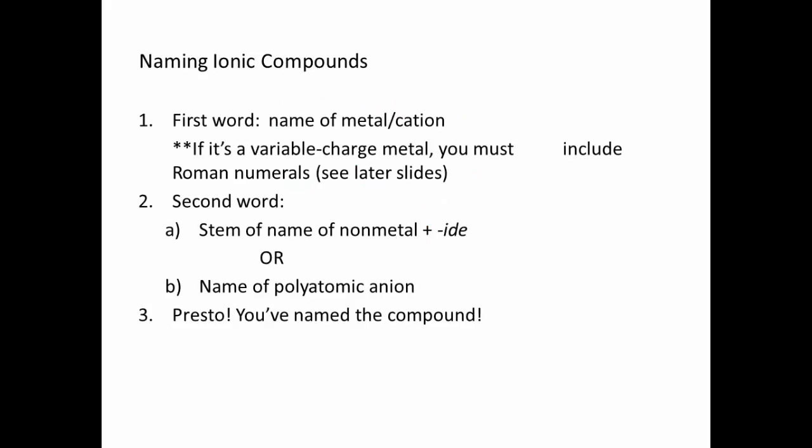We are going to combine these into our names of our compounds. So, when we name an ionic compound, the first word is just going to be the name of your metal or your cation. Your cation is normally going to be a metal unless you've got one of our two positively charged polyatomic ions, which are ammonium or hydronium. If we have a variable charged metal, we're going to be doing something a little bit different. For now, we're only going to be using a single charged metal. So, we won't worry about that exception for a while. The second word is going to come from the name of your anion. So, it's either going to be the stem name of your non-metal plus ide or it's just going to be exactly what the polyatomic anion name is. And you combine those two words and that's your name of the compound.